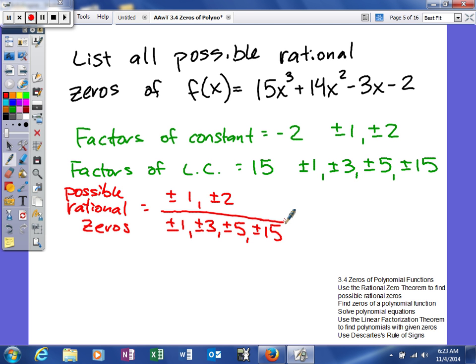So this is really going to narrow our search for the zeros that we could have. So for our answer, we're going to take each one of the values in our denominator and divide it into each one of the values in our numerator. So 1 divided by 1 is 1, 1 divided by 2 is 2, and 1 divided by 3 is plus or minus 1 third, 2 divided by 3 is plus or minus 2 thirds, and then you'll get plus or minus 1 fifth, plus or minus 2 fifths, and then plus or minus 1 fifteenth, and plus or minus 2 fifteenths.